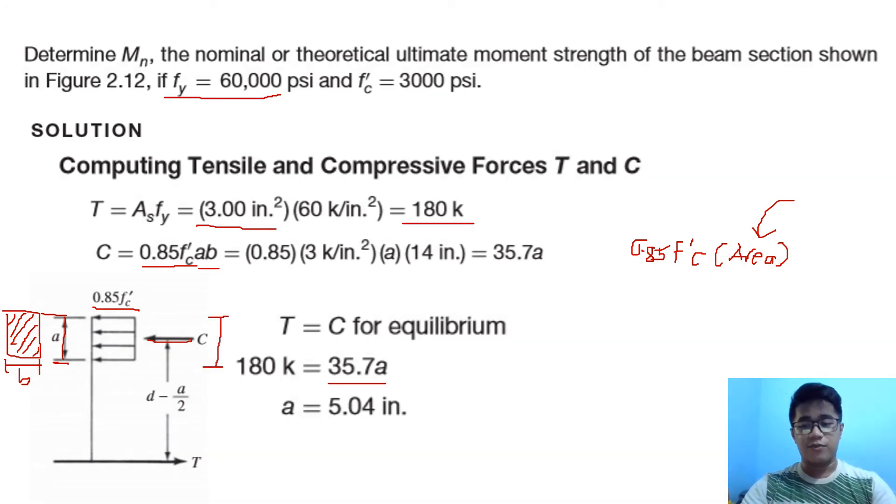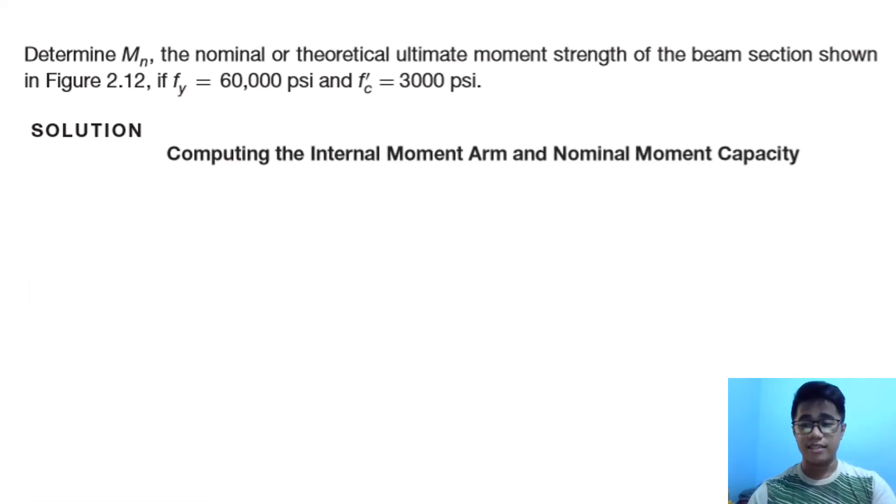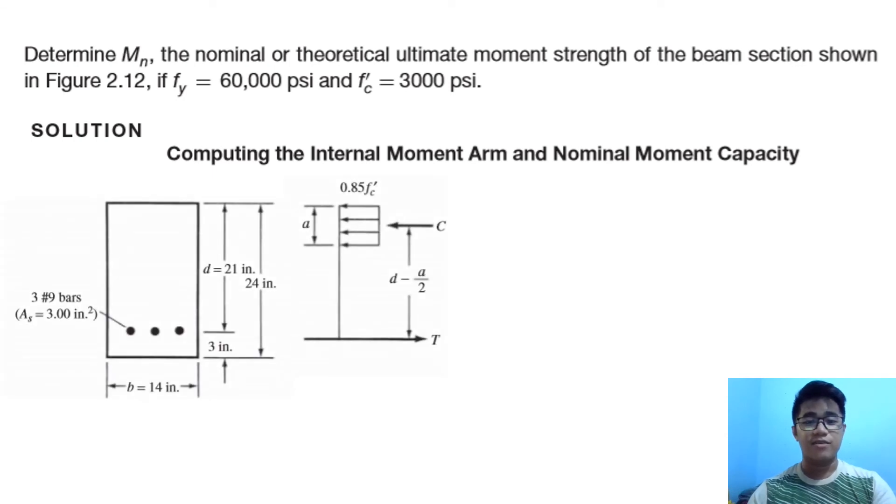Since we already have that, we know the distance between the compression and the tension—that is our moment arm. For solving the moment, all we need is a force times the distance or moment arm. The tension and compression are equal, so we can solve that. Having a, we can solve our d, then we can solve our moment arm.